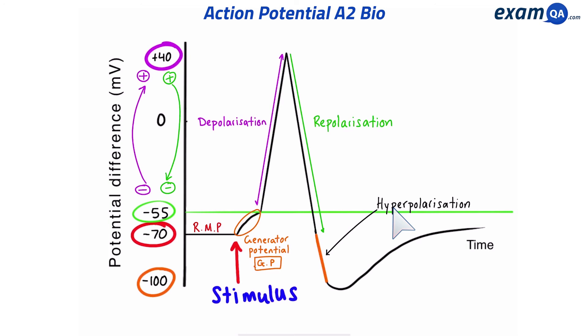Eventually, those extra voltage-gated potassium channels closed and the membrane went back to resting membrane potential.